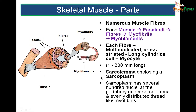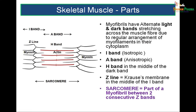In muscle, the cytoplasm is called sarcoplasm and the plasma membrane is called the sarcolemma. In skeletal muscle, the sarcoplasm has several hundred nuclei, peripherally placed under the sarcolemma. Myofibrils have alternate light and dark bands — the A band (dark) and the I band (isotropic, light band). The H band is in the center of an A band. These bands are made up of regularly arranged myofilaments: the thick filaments are actin filaments and the thin filaments are myosin filaments.